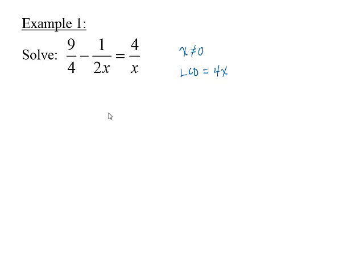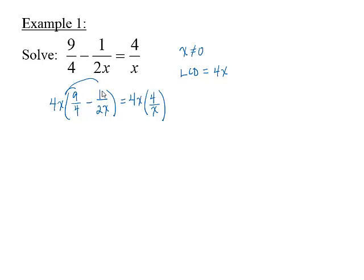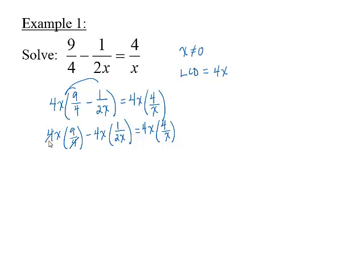Multiply each side of the equation by 4x to get 4x times 9/4 minus 1/(2x) equals 4x times 4/x. Simplifying each product, we get 9x minus 2 times 1, or 2, equals 4 times 4, or 16.